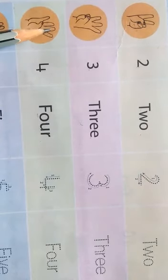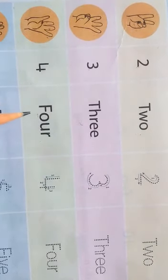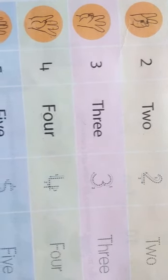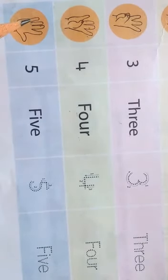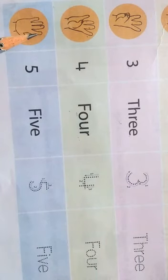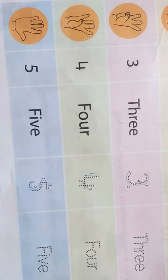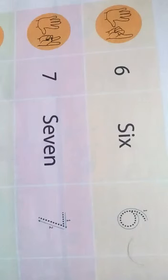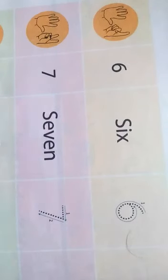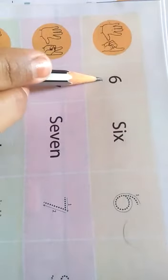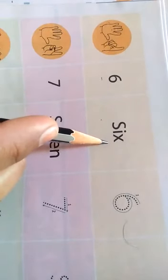1-2-3-4, so we write 4. F-O-U-R, 4. 1-2-3-4-5, so we write F-I-V-E, 5. Count the fingers: 1-2-3-4-5-6, so we write 6. S-I-X, 6.